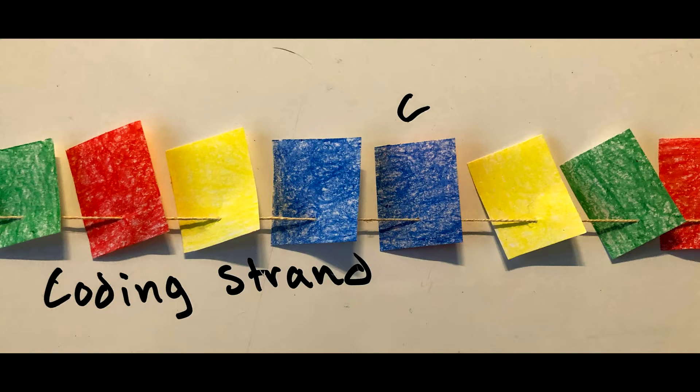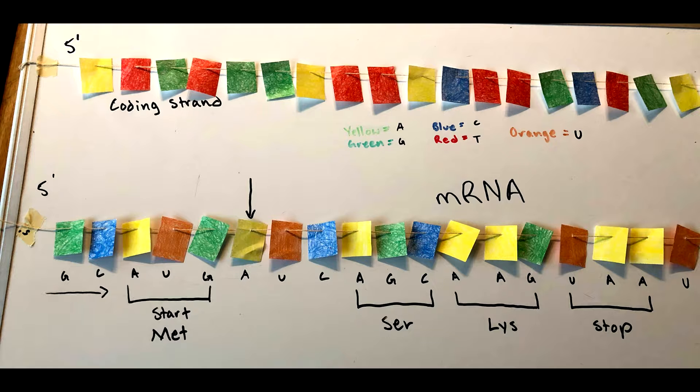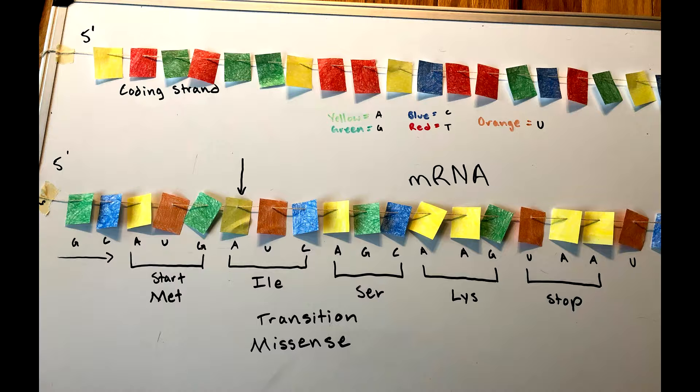If this C in the coding strand undergoes a point mutation and becomes a T, then this nucleic acid will be an A and will no longer be translated to valine, but will instead make isoleucine. This point mutation is a transition. A transition is when a purine is changed to another purine.